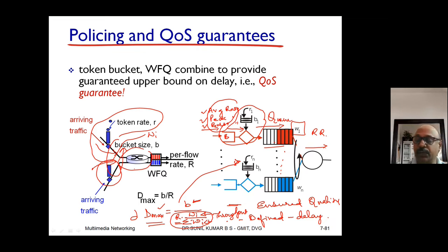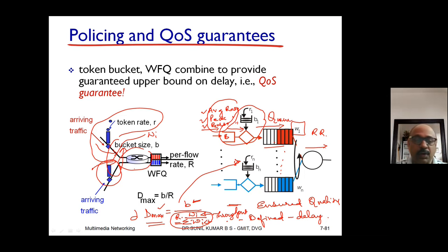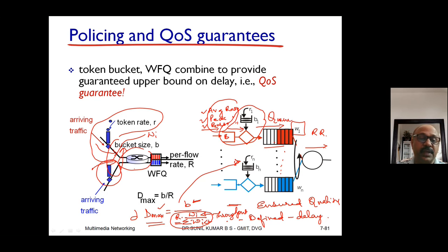This token bucket system combined with weighted fair queuing and round robin is the ultimate solution to guarantee quality of service by defining the maximum possible delay for every packet delivery. With this I conclude this discussion. In the next class, we will discuss the next concept — differential service — covering how the network handles different services for different customers.